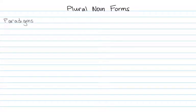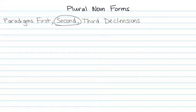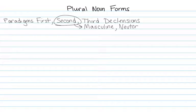Plural noun forms. If you recall, there are three paradigms for noun forms: the first, second, and the third declensions. For now, we have only learned the second declension. That means that every noun you learn will follow the patterns that we're about to cover. The second declension nouns can either be masculine or neuter, and there are slight differences in the two.